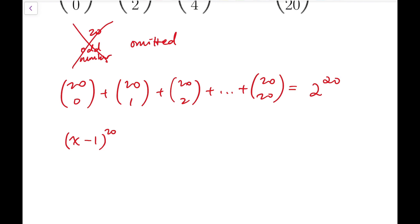So that means it should equal to 20 choose 20 times x to the power 20 minus 20 choose 19 times x to the power 19 plus 20 choose 18 times x to the power 18, and then minus again 20 choose 17 x to the power 17, and so on.